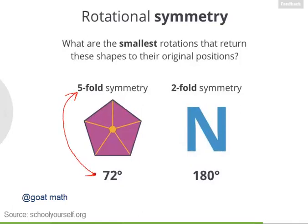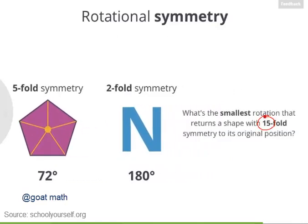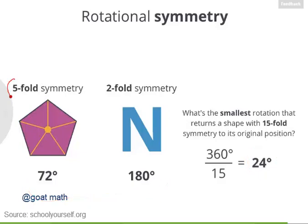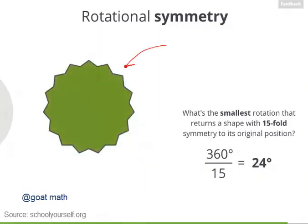Do you notice a relationship between a shape's order of rotational symmetry and the smallest angle that returns it to its original position? Suppose you have a shape with 15-fold symmetry — what's the smallest rotation that will return it to its original position? A complete rotation is 360 degrees, and if you divide this by 15, the order of rotational symmetry, this gives you the smallest angle: 24 degrees. This approach also works for these shapes: 360 divided by 5 equals 72, and 360 divided by 2 equals 180. Here's a shape with 15-fold symmetry — it has 15 tiny peaks along its perimeter, and the smallest rotation that returns it to its original position is 24 degrees.